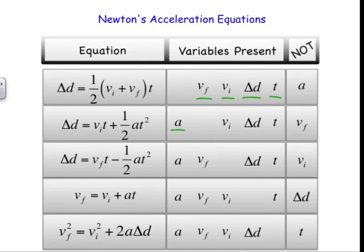There are five variables. Each equation only contains four of them. So it should make sense that there should be five equations, each equation missing one of the variables.